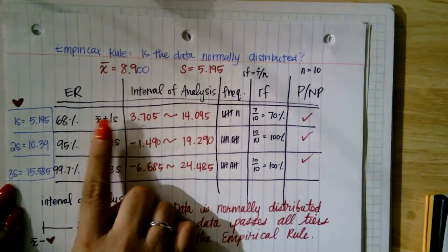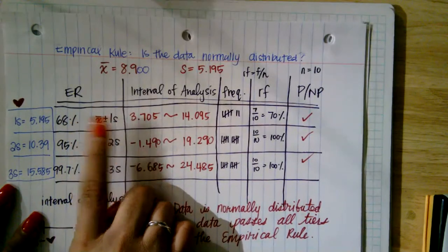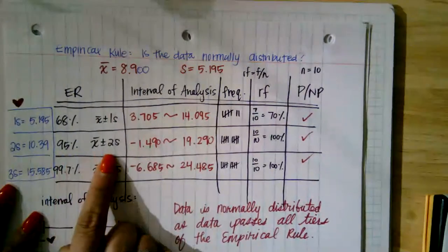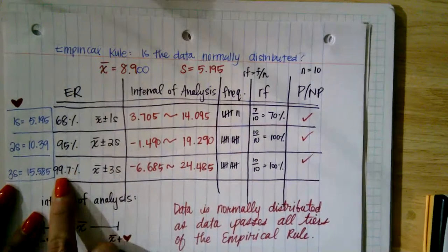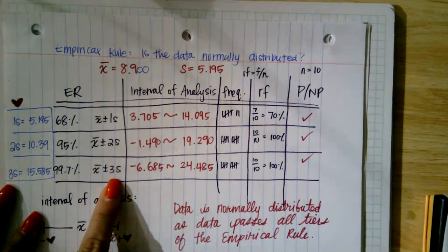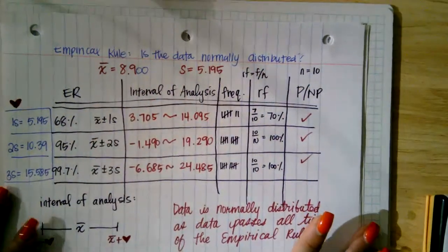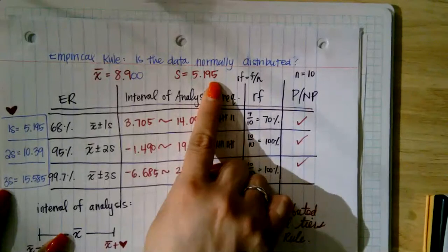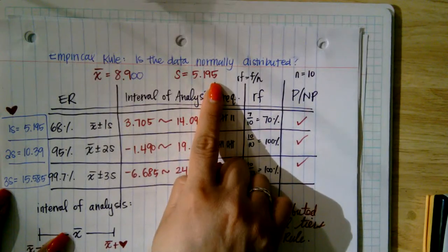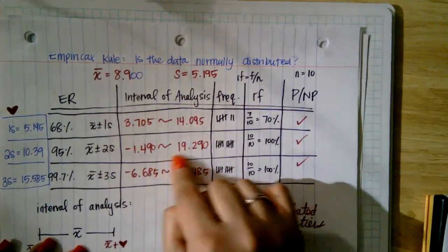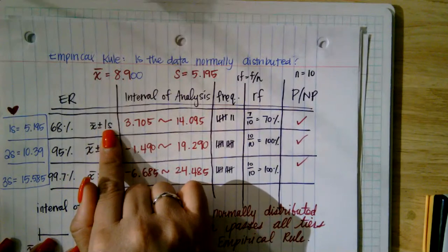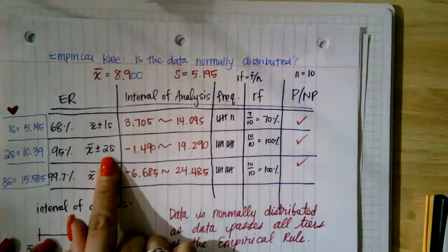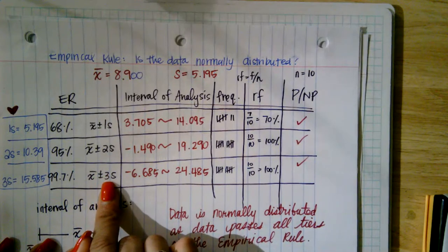The first requirement: at least 68% of the data must be within one standard deviation from the mean. Second requirement: 95% of the data must be within two standard deviations from the mean. Third requirement: 99.7% of the data must be within three standard deviations from the mean. To test this data set, I need my mean of 8.9 and my standard deviation of 5.195.